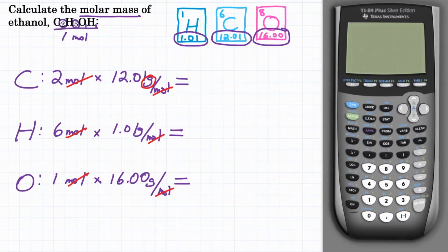So now let's get our calculator, and we are going to start with 2 times 12.01. Hit enter, and that gets us 24.02, so 24.02 grams of carbon in one mole of ethanol.